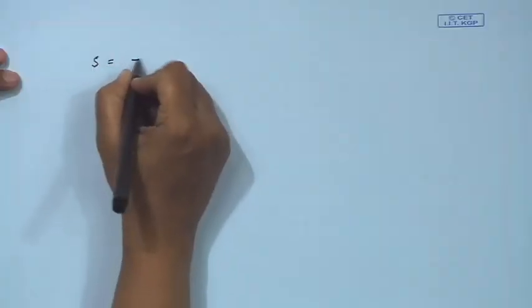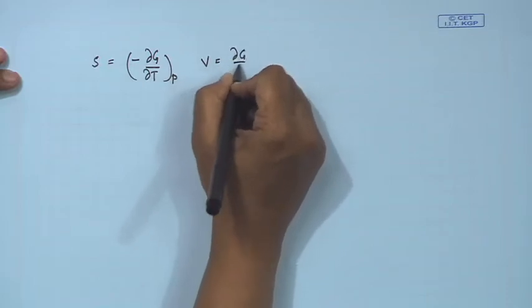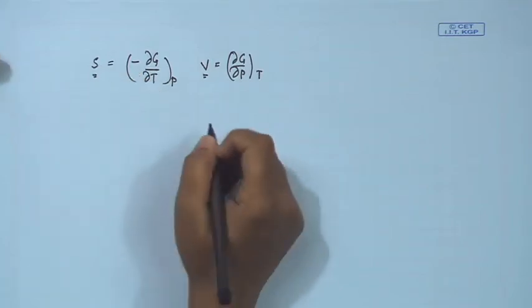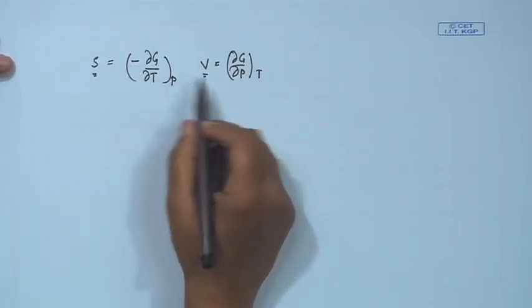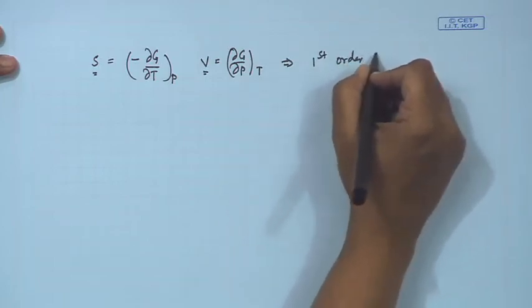In the last class we discussed the phase transitions of pure substances from one physical state to another. All of these transitions are referred to as first-order transitions, or transitions of the first kind, because in those transitions the first derivative of the thermodynamic potential G — namely, minus del G del T at constant P (which is entropy S) and the volume del G del P at constant T — undergoes an abrupt discontinuity at the transition.